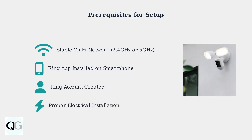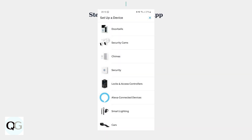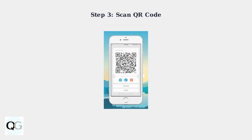Before setting up your Ring Floodlight Camera Pro after a reset, ensure you have four essential prerequisites ready. Open the Ring app on your smartphone and tap Set Up a Device to begin the configuration process. From the device list, choose Floodlight Cam under the Security Cameras section. Scan the QR code located on your Ring Floodlight Camera Pro device or in the instruction manual using your smartphone camera.